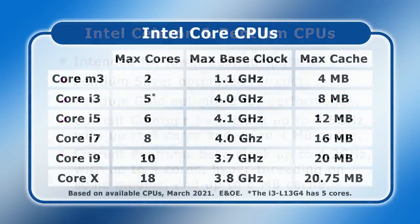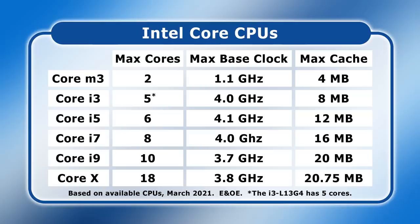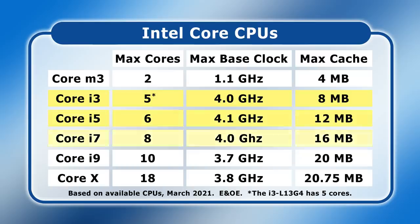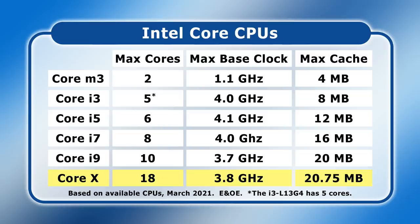Moving on, we get to Intel's Core range, which includes their Core M3, Core i3, Core i5, Core i7, Core i9, and Core X series. The Core M3 chips are designed for mobile devices but need to be lightweight with a good battery life. The Core i3, i5, i7, and i9 chips are mainstream desktop and laptop processors with increasing levels of performance. Finally, the Core X series delivers the highest performance with its extreme version i7 and i9 chips. The maximum number of cores, base clock, and cache increases across the Core family, and Intel's hyper-threading technology is now available in all Core ranges apart from Core M3.